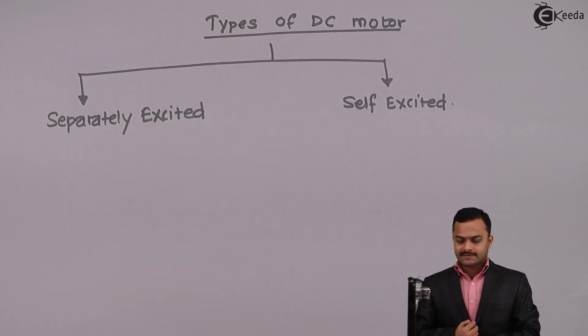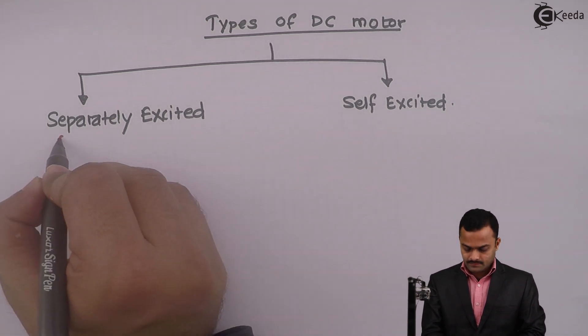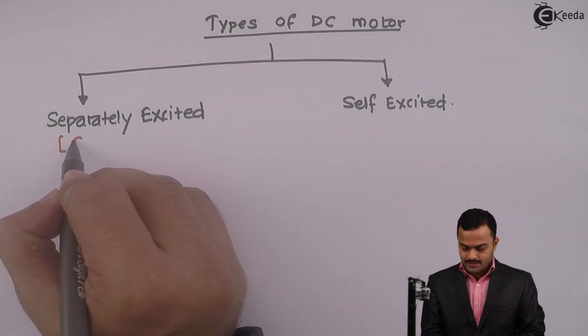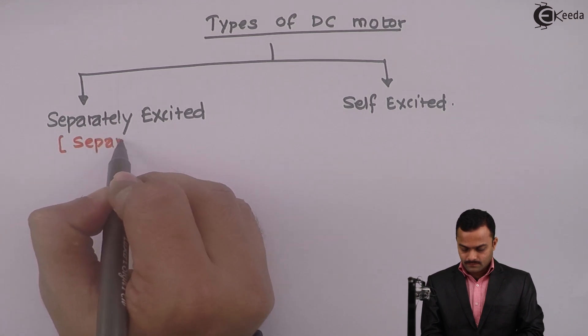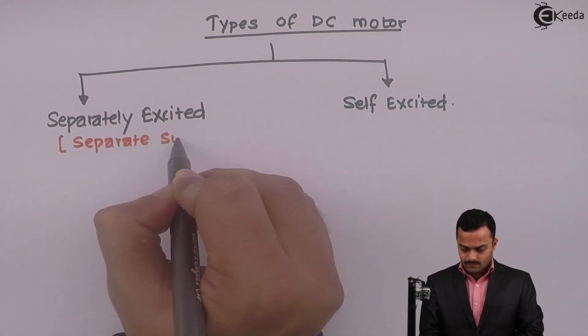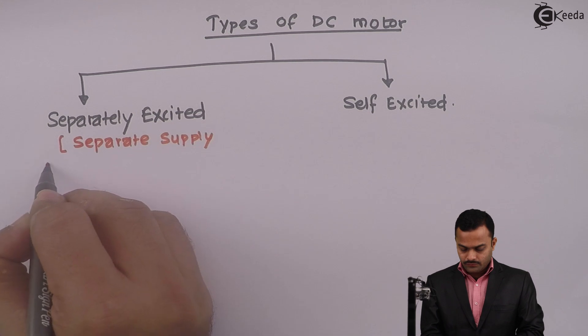Now what do you mean by separately excited? We have independent supply for field winding, or you can say separate supply to field winding.